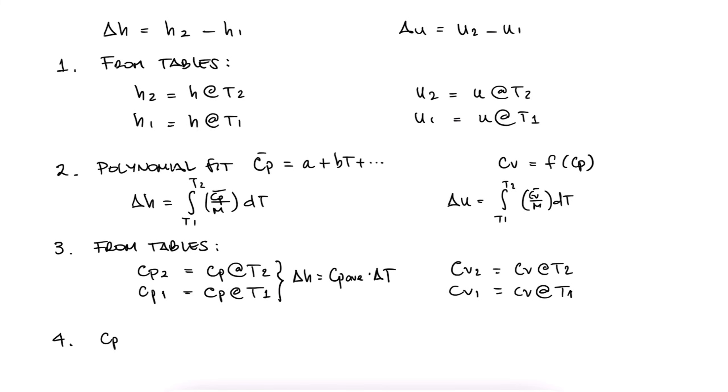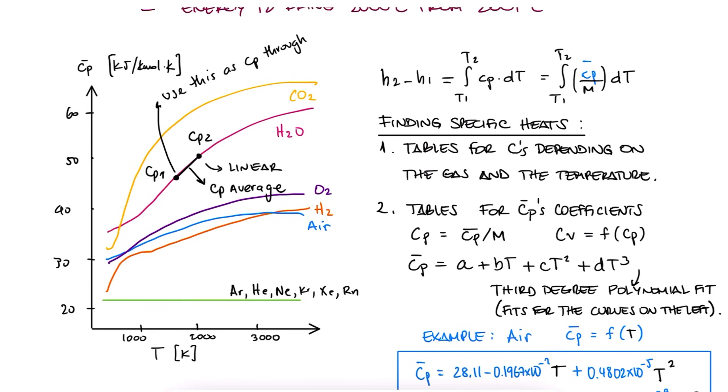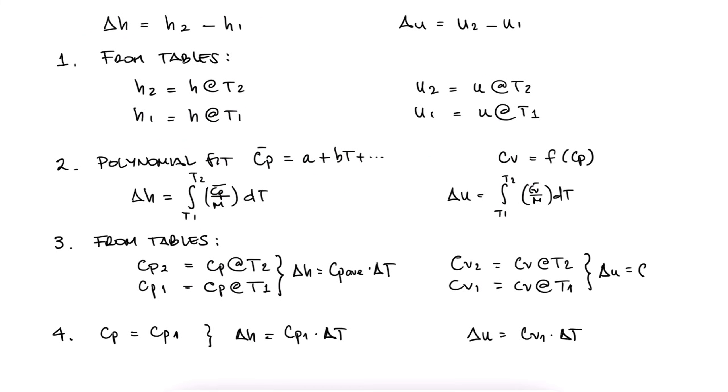Four, find Cp at the initial temperature, and assume that Cp is independent of temperature, and therefore constant. Of course, this last one can only be assumed in very specific scenarios, and it can still be very inaccurate.